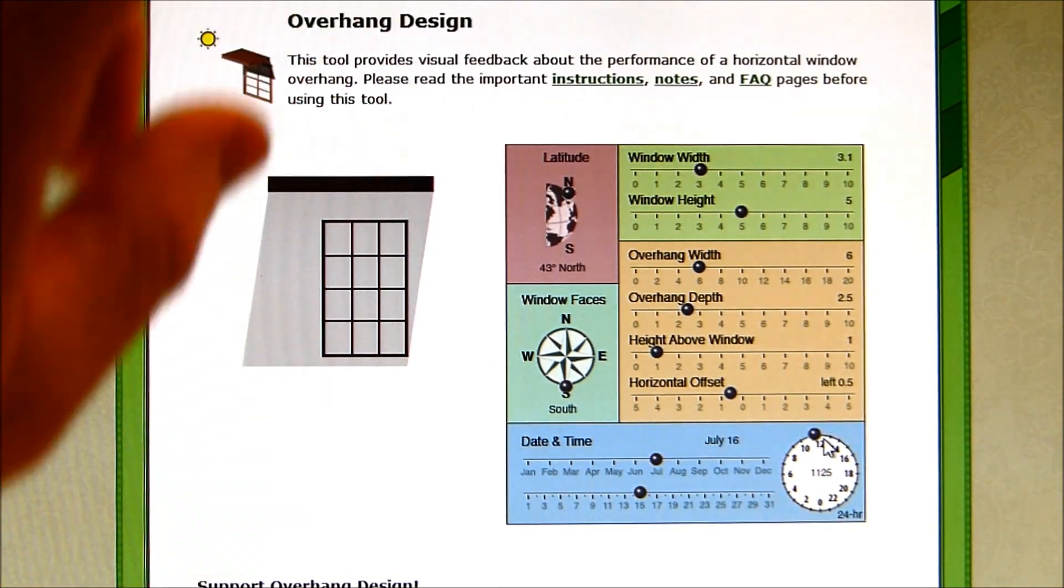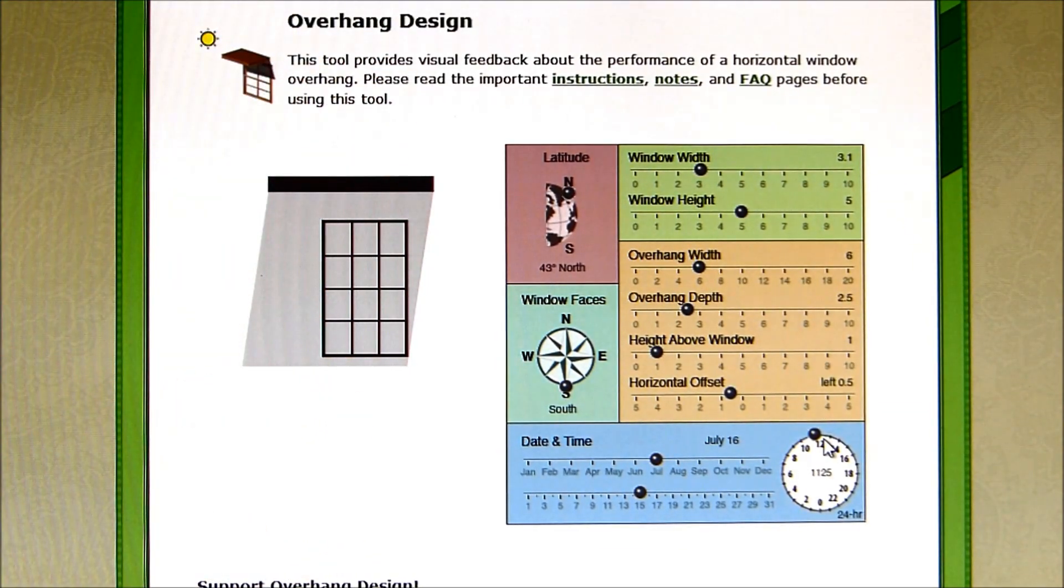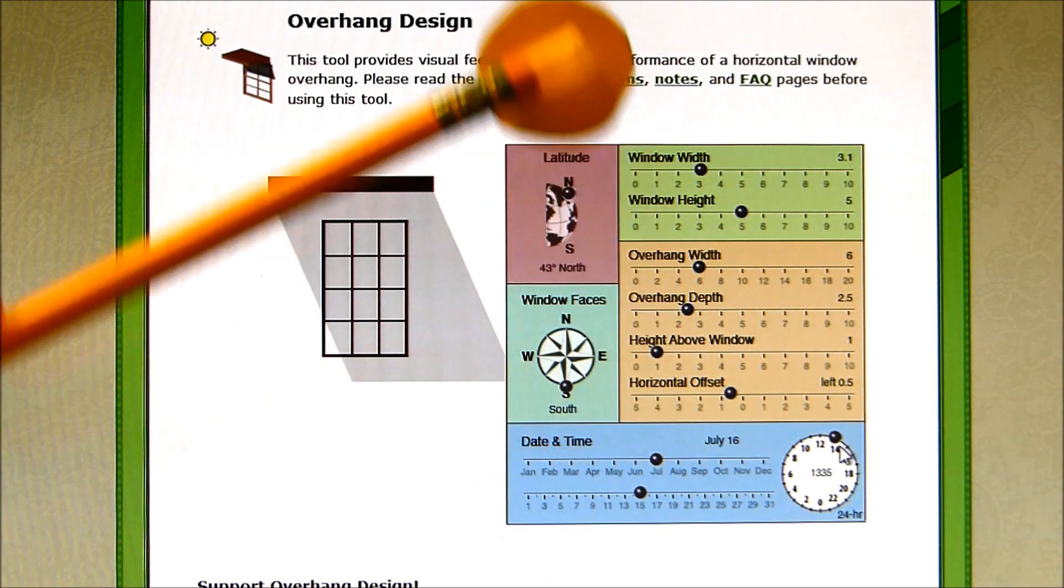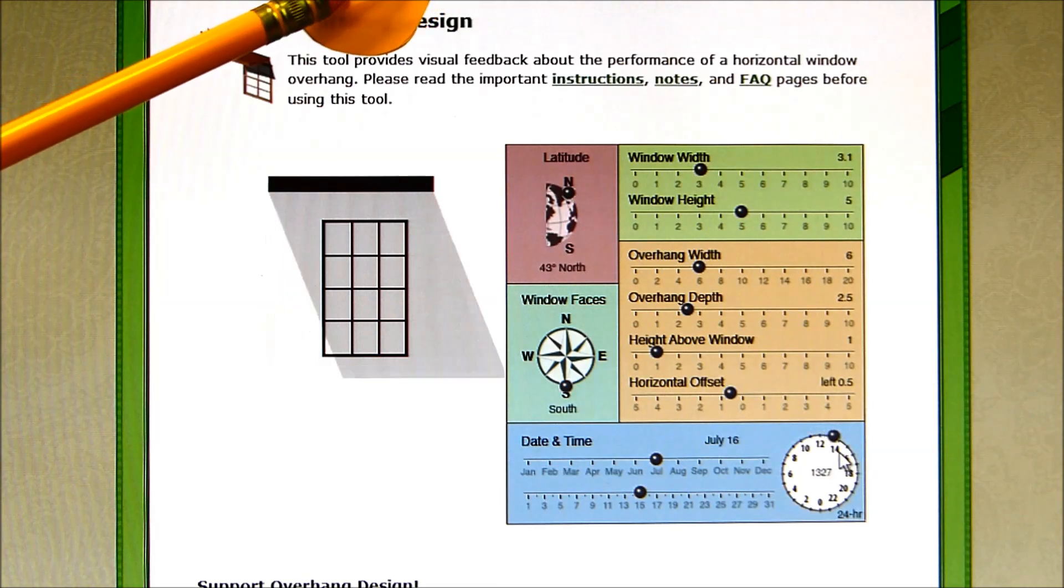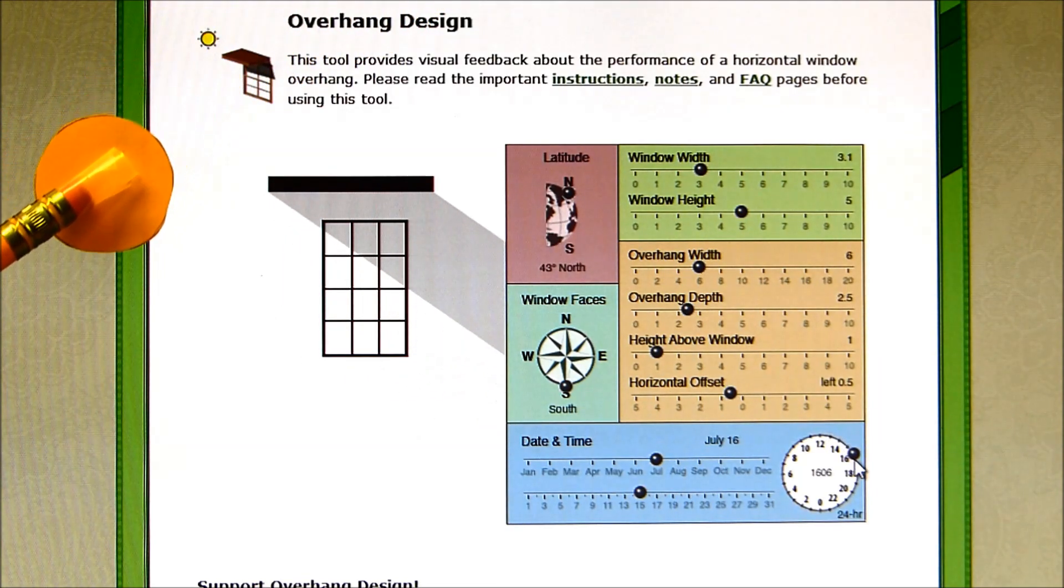So this shadow that you see over the window is from the outside of the window. That's where the window is going to be completely shaded by the sun shining directly above and off here as it sets in the west.